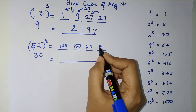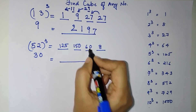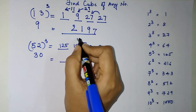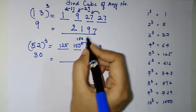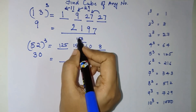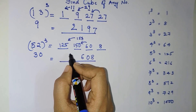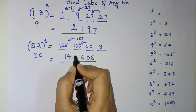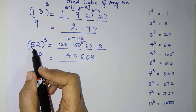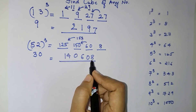For the final answer, concentrate on the units place. The last part is just 8, so write 8. The units digit of 60 is 0, and 6 left over gets added to 150, giving 156. The units digit is 6, and 15 gets added to 125 giving 140. So 52³ = 140608.